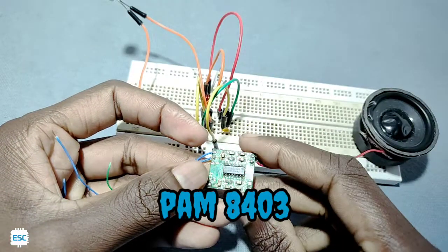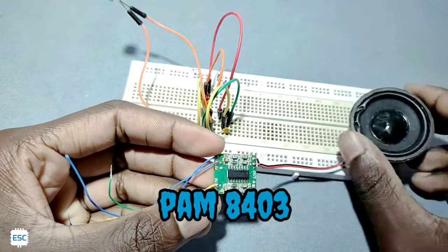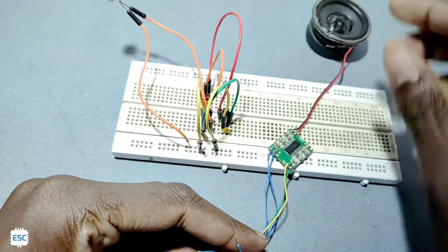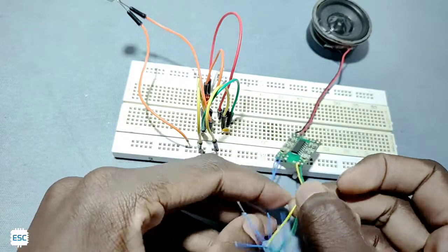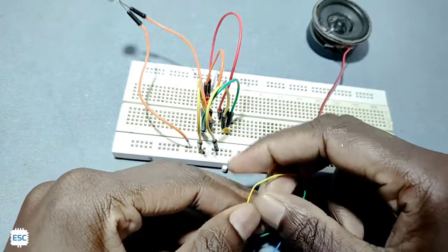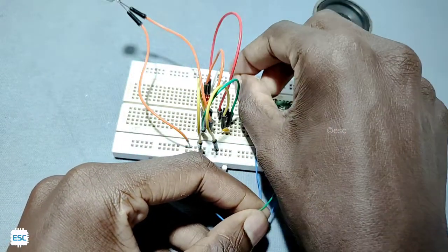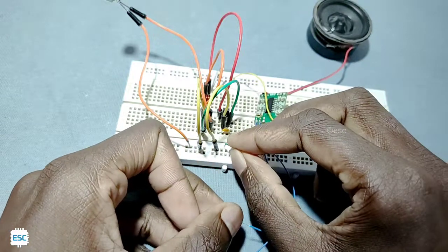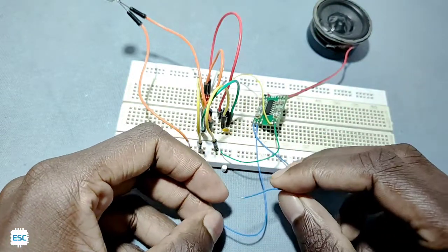After completing the receiver circuit, I connected a PAM8403 3W amplifier module to the circuit. I connected the ground to ground, VCC to 5V, and the input of the amplifier module to the output of the receiver circuit.